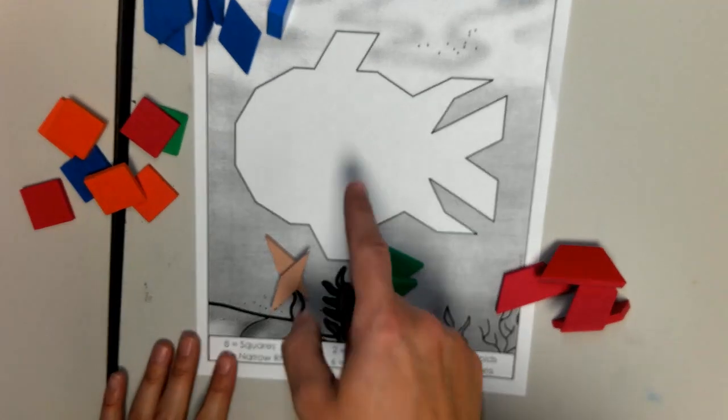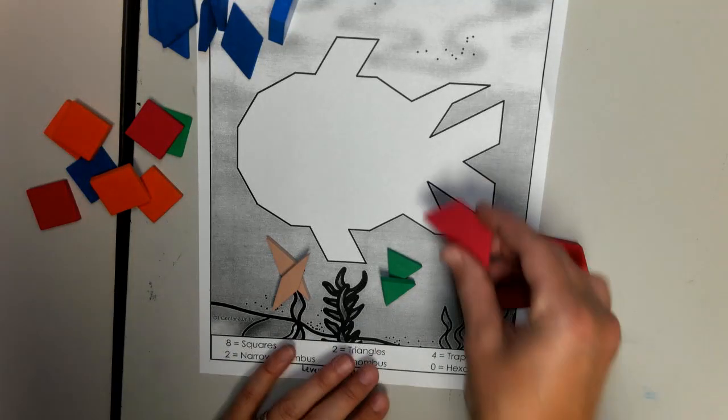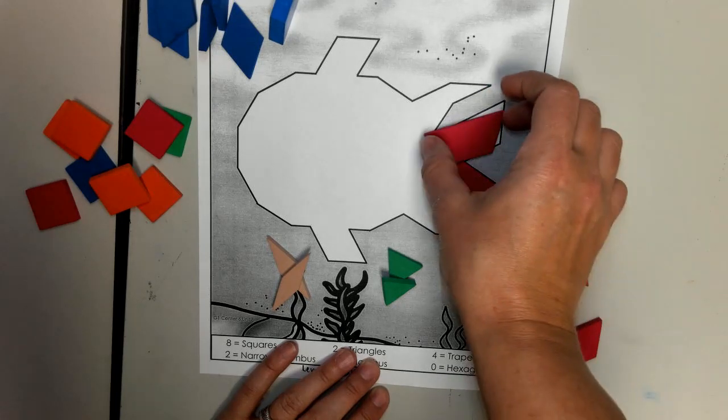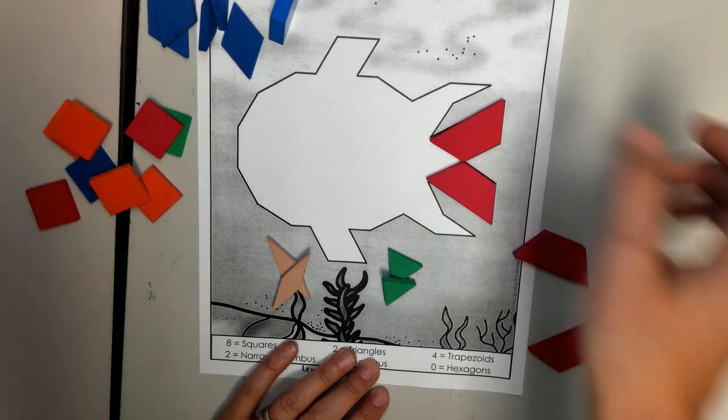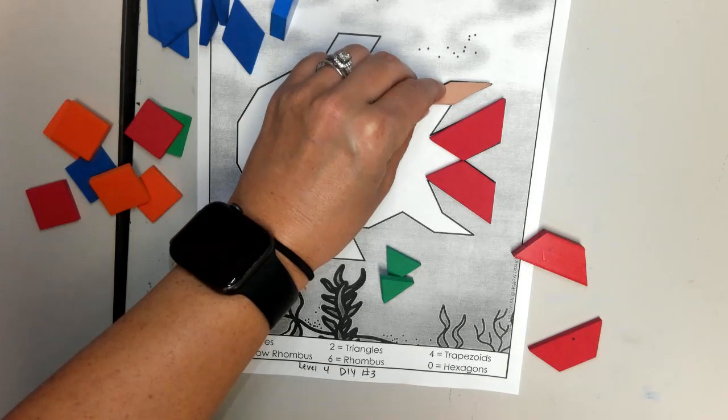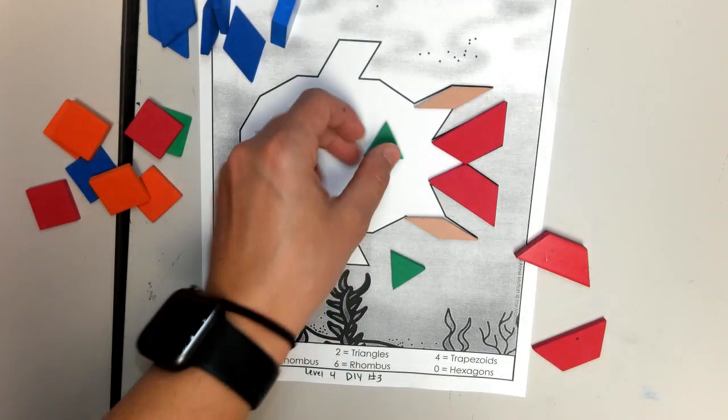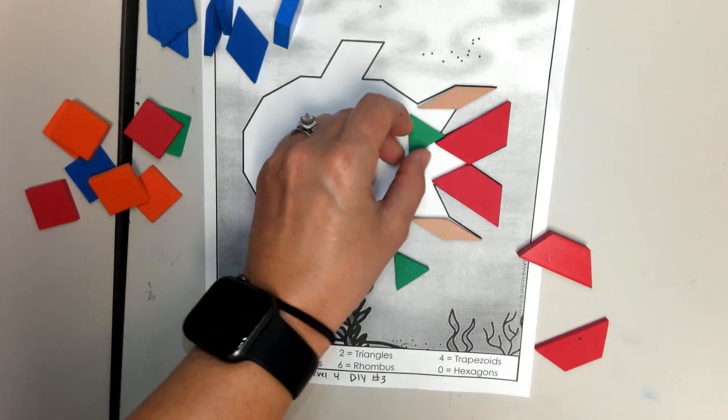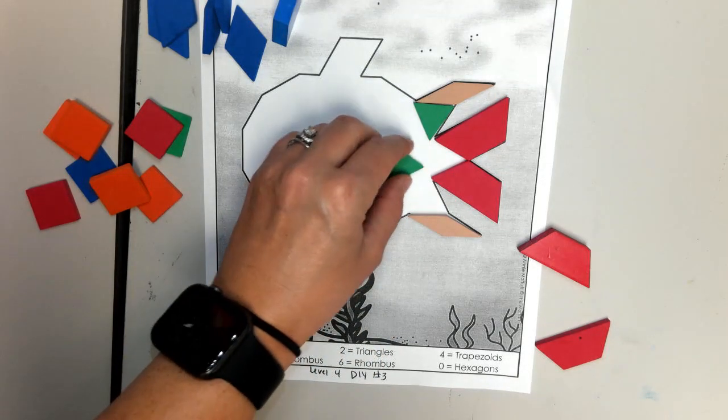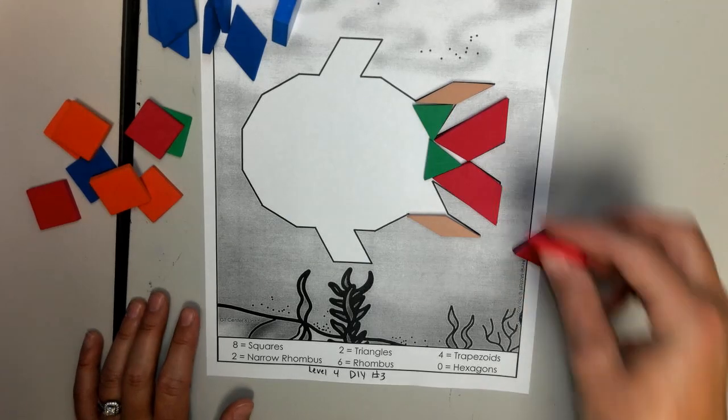So your job is to fill in this fish shape with only these shapes provided. So just fill them in. It's kind of like a puzzle. So just keep going until the whole fish is filled in. Remember that you can only use the shapes that it listed.